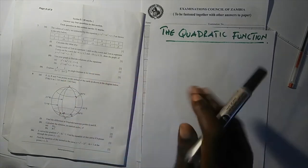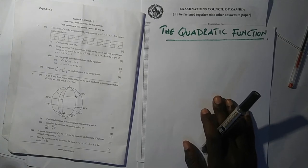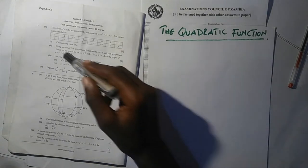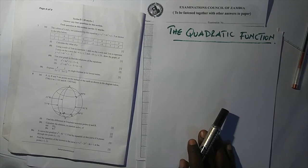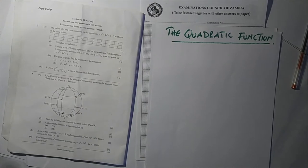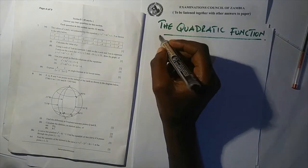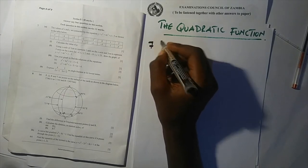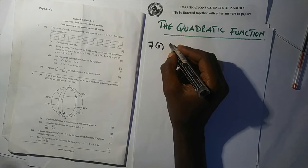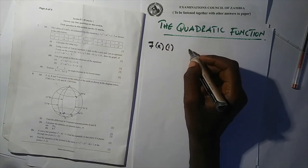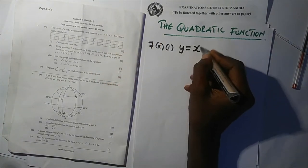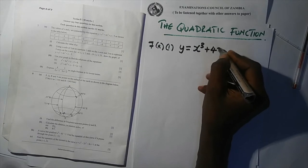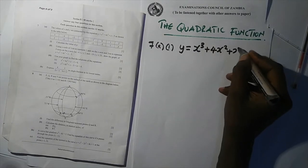In the exam you will be given your answer booklet. I have my plain paper and also a graph paper for part two of the question. We are going to answer this question fully. So for part one — calculating the value of p — we write down the equation: y = x³ + 4x² + x − 5.